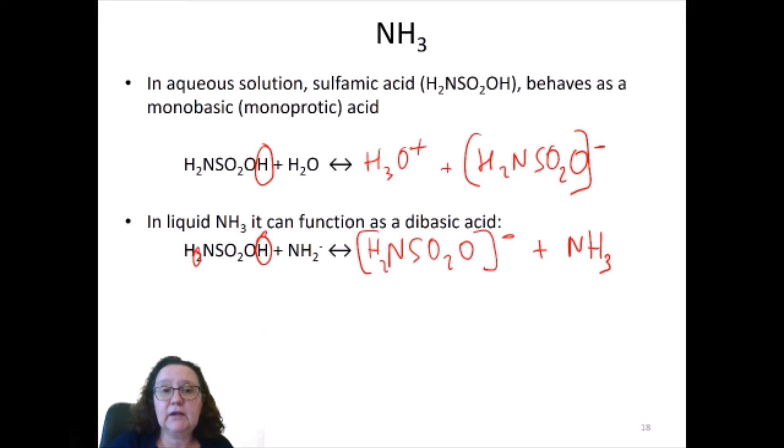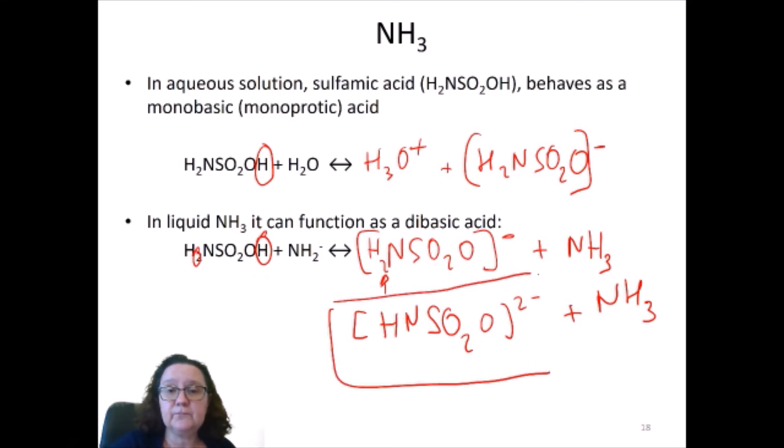It can also donate a second hydrogen which is one of these. So you end up with this anion and having donated another hydrogen to the amide. It stops here, it doesn't lose the third one. So while in water it only behaves as monoprotic, in liquid ammonia it behaves as diprotic, which is interesting.